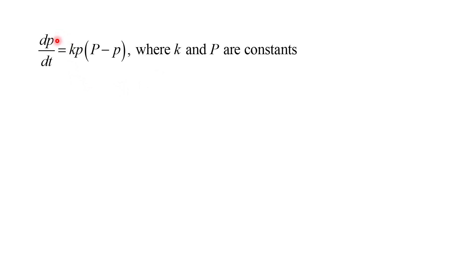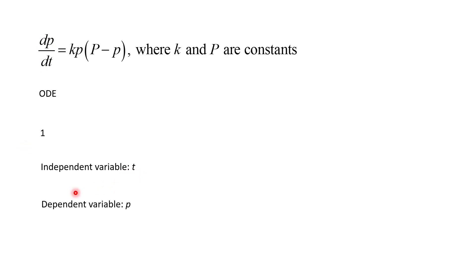How about: the derivative of little p with respect to t equals k times little p times (capital P minus little p), where capital P and k are constants. Little p depends on t. This is an ODE, order one, independent variable t, dependent variable little p — and this is nonlinear because if you distribute, you get k times p squared, and p is the dependent variable, so it can't have a power greater than one.